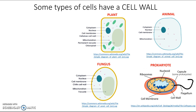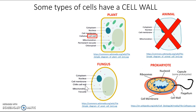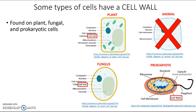Here we have four diagrams: a plant cell, an animal cell, a fungal cell, and a prokaryotic cell. In each of these diagrams the major components of the cell have been labeled for you. The plant cell does have a cell wall. The animal cell? Nope, it does not. The fungal cell does have a cell wall and the prokaryotic cell also has a cell wall. So cell walls are found on plant, fungal, and prokaryotic cells but not animal cells.